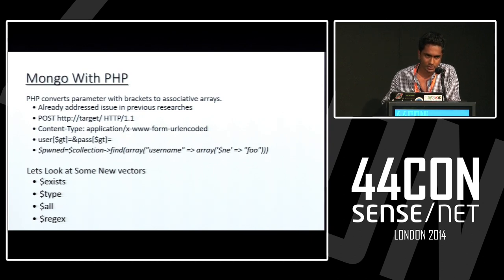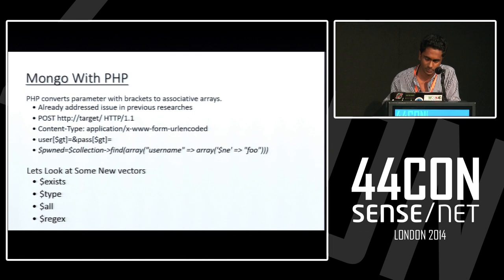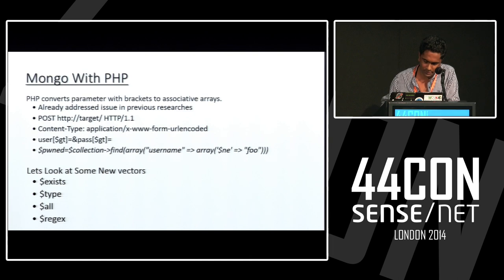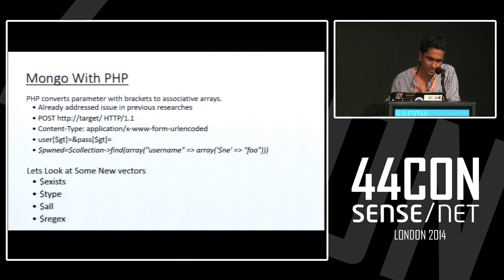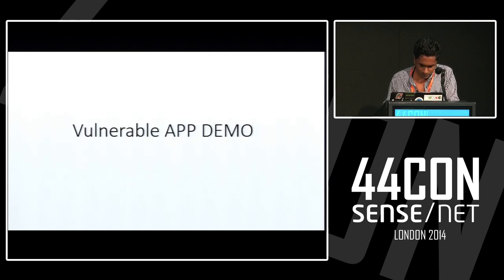Some of the new injection vectors are $exists, $type, $all, and you could also use regex within JavaScript itself. The $exists operator matches documents that have the specified field. The $type variable selects documents if a field is of the specified type — for example, if it is a character type, return all documents of character type. $all matches arrays that contain all elements specified in the query.